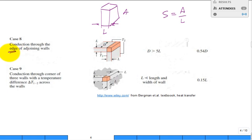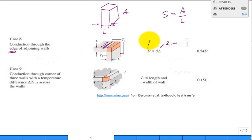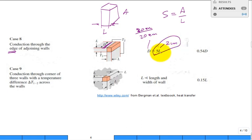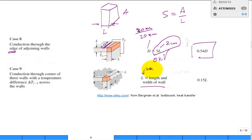Our edges were either 20 or 30 centimeters. Is 20 centimeters greater than five times two centimeters? Yes — criteria satisfied. For the corner, as long as L is much less than the length and width of the walls, and L was two centimeters while the walls were 20 centimeters — that's fine. So you set up a tabulation: be careful, you have two of these faces, two of those faces, two of those faces — and they are not all the same area; the 20 by 20 face is different from the 20 by 30 face.